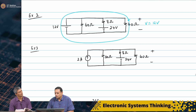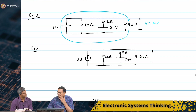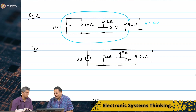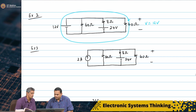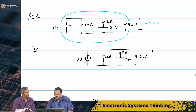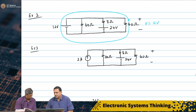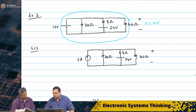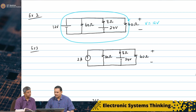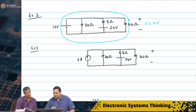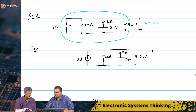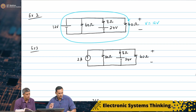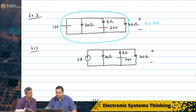I clearly have to use superposition — that is the easiest way to do this. So, let us use superposition and apply the sources one by one. Let us start with the 2 ampere source.